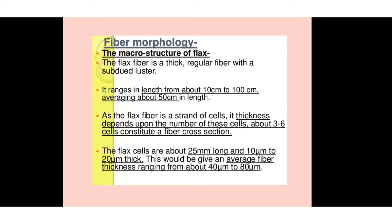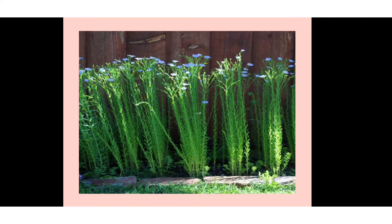Regarding the macro structure of flax fiber: the flax fiber is a thick, regular fiber with a sharp, silky luster. The length ranges generally from 10 centimeters to 100 centimeters, averaging about 50 centimeters. Flax fiber is a strand of cells, with the thickness depending on the number of cells — about 3 to 6 cells comprising a fiber cross-section. The individual flax cells are about 25 mm long and 10 to 20 micrometers thick, giving an average fiber thickness of 40 to 80 micrometers.